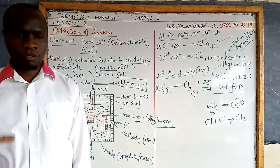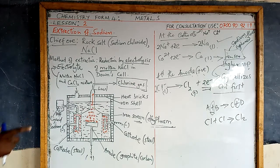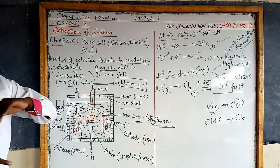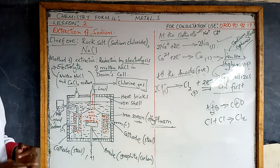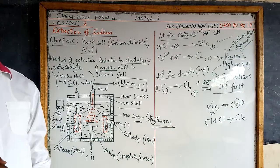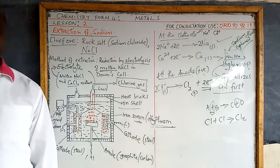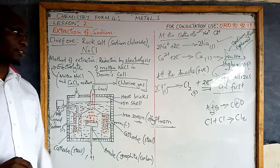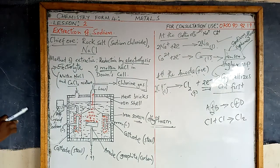Once you take note of those points, that is basically what we call the Down cell. There are other questions on properties and reactions of sodium, which I will discuss later when looking at properties of metals — how they react with water, air, and acids, and their uses. For now, I will concentrate on the steps involved in their extraction. This is how sodium metal is extracted. In lesson three, we shall discuss the extraction of aluminium.